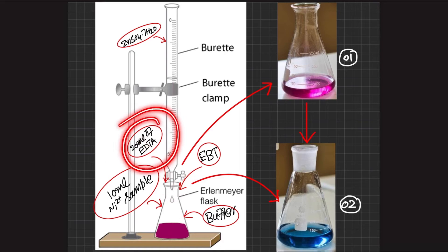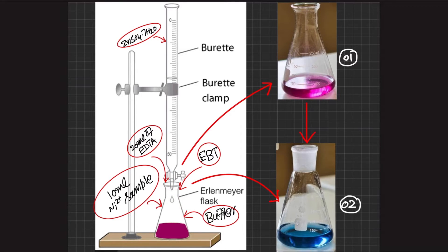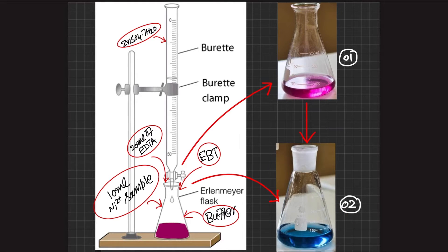One extra step is done here: approximately 20 mL of EDTA is added in excess to this solution. Since EDTA makes a more stable complex than EBT, all of the metal breaks its complex from Eriochrome Black T and forms a complex with EDTA instead. Now EBT is set free, so the wine red color shifts to sky blue — the color of the free Eriochrome Black T indicator — as shown in the figure. This marks stage one transitioning to stage two.